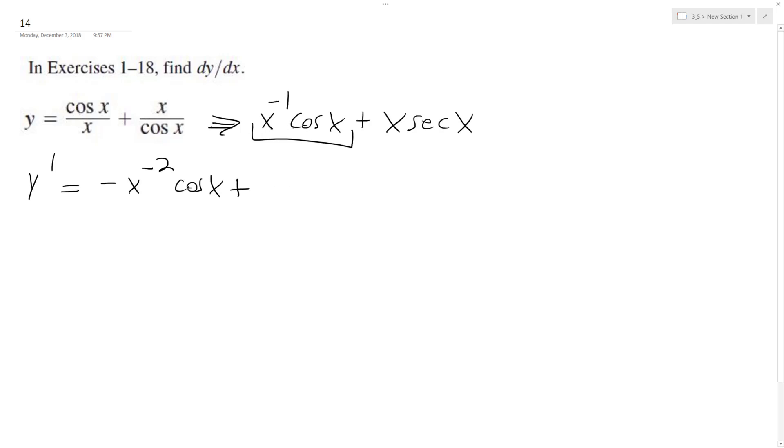and then the derivative of cosine of x is negative sine of x, so we get negative x raised to the negative 1 sine of x.